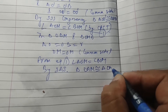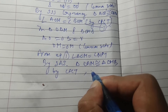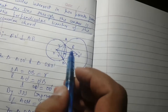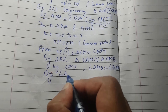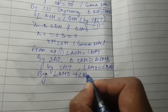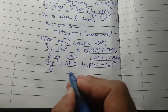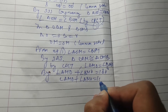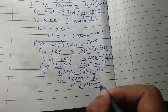So by SAS congruency rule, triangle OAM is congruent to triangle OMB. Again by CPCT, angle AMO is equal to angle BMO. But we know that angle AMO plus angle BMO equals 180 degrees because they form a straight line. Substituting, twice of angle AMO equals 180, so angle AMO equals 90 degrees.